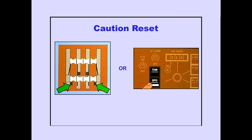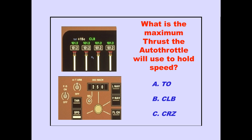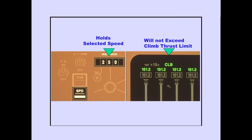Pushing an autothrottle disconnect switch or selecting an autothrottle mode resets the caution. Selecting an autothrottle mode also allows the autothrottle to re-engage. In the speed mode, the thrust will not exceed the thrust limit for the selected thrust mode. In this case, climb limit is selected, so climb thrust is the reference limit and will not be exceeded.